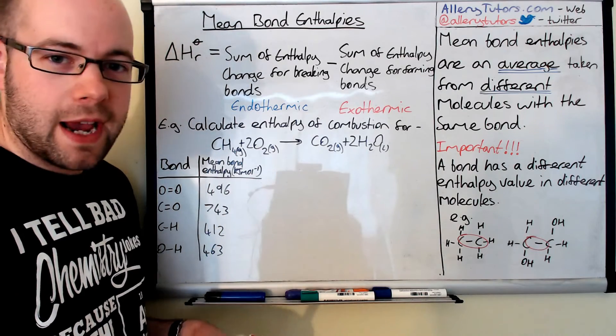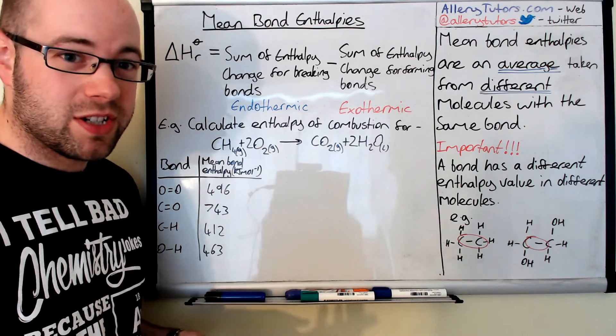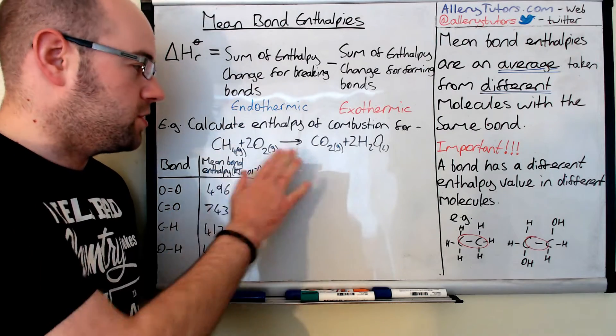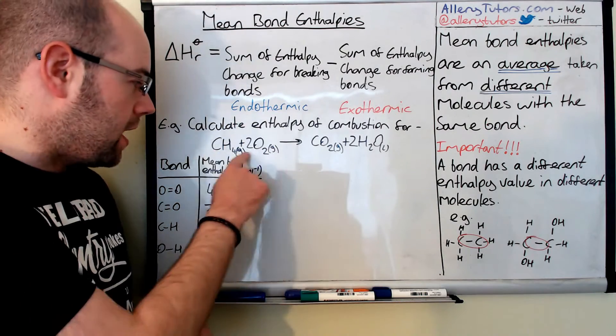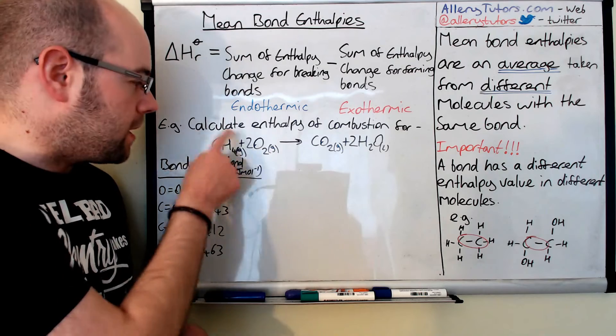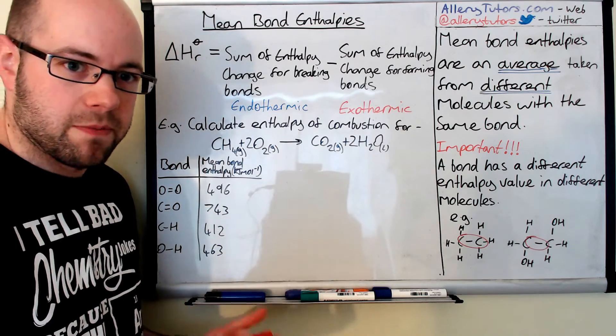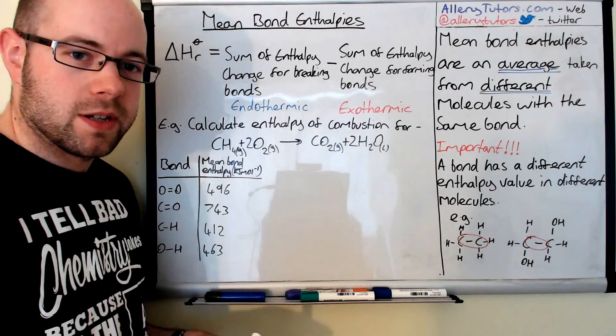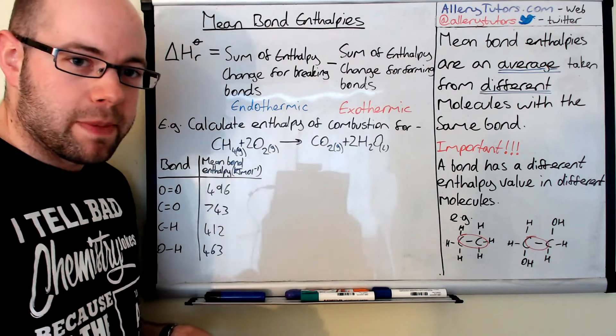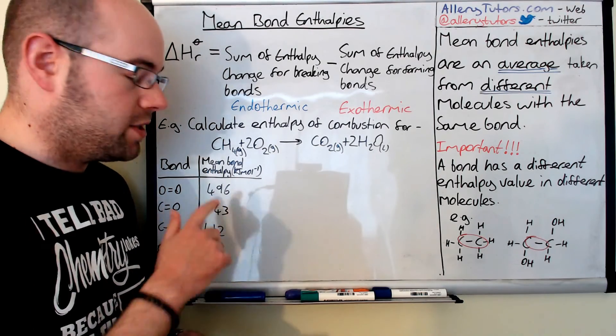I'm going to go through a worked example here. In this case we're going to work out the enthalpy of combustion, which is still the enthalpy of a reaction but it's just a specific type because here we're burning a fuel. We're taking methane, we're reacting it with oxygen which is just combustion, and we're forming carbon dioxide and water. The equation is already balanced and that's really important.